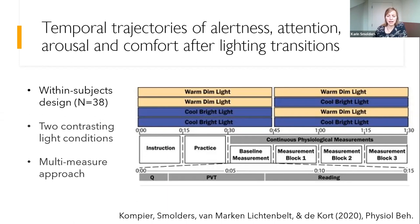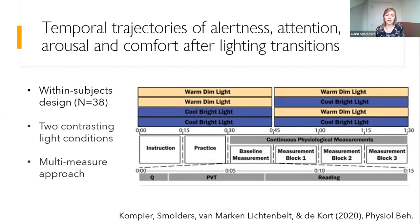After this initial baseline, participants were exposed to either cool bright light or warm dim light. The study was designed so that we had transitions both from warm dim to cool bright as well as the other way around, and we had constant light conditions where participants were continuously exposed to warm dim or cool bright light throughout the experimental session. We had continuous physiological measurements. Each session took 90 minutes and was scheduled at the same time of day, with participants coming to the lab on four different days at the same time.